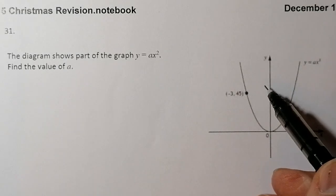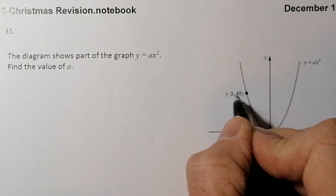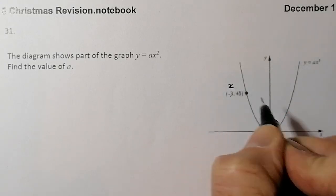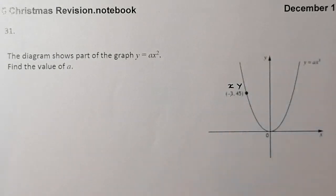So from this graph here what I can see is that with this coordinate that I've been given, that's my x coordinate, that's my y coordinate.